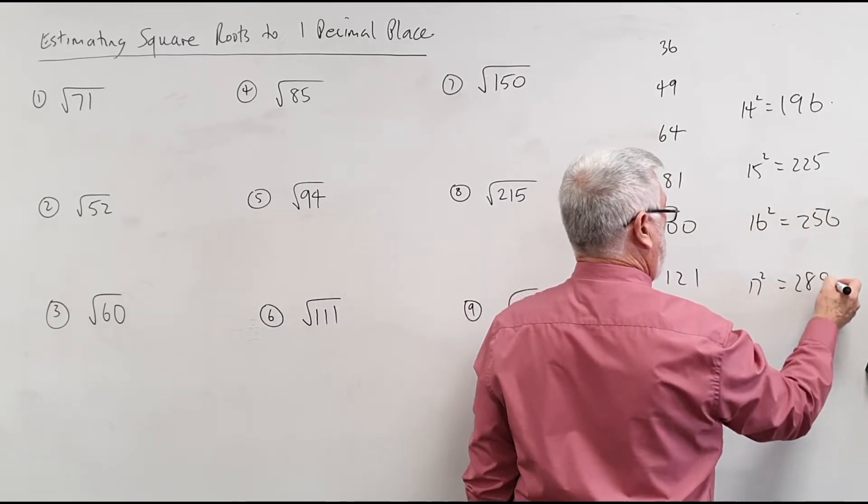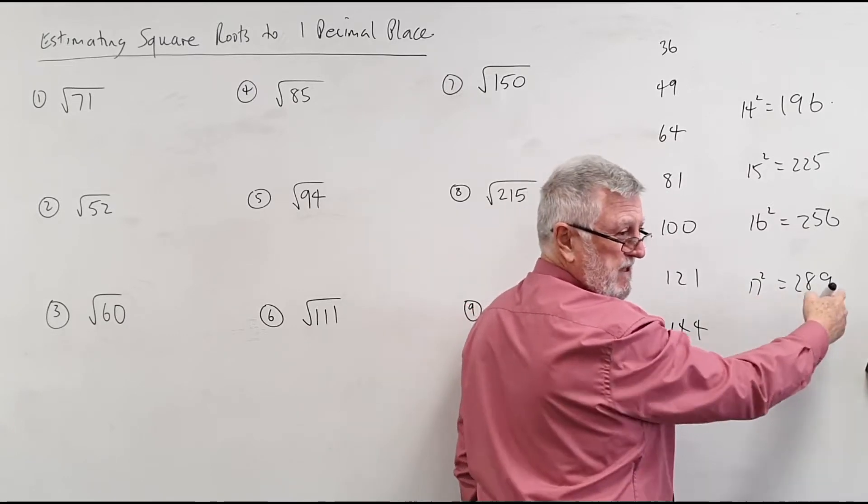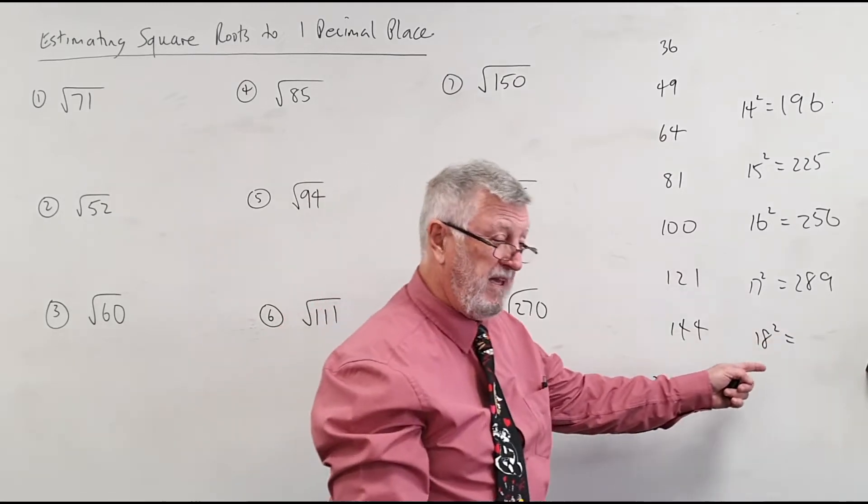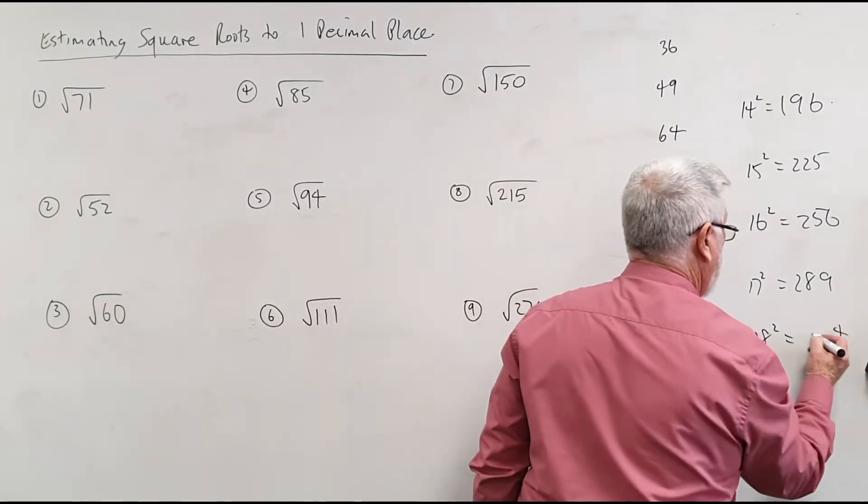289. 17 squared 289. That's the one I often forget for some reason. 17's of 49, so it's got to end in the 9. 8 squared is 64. Got to end in the 4. 324.